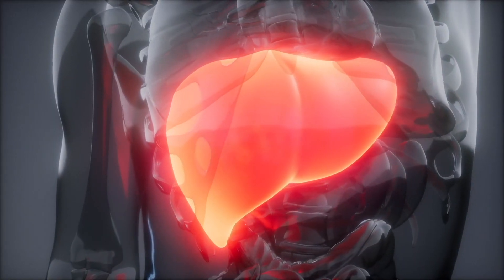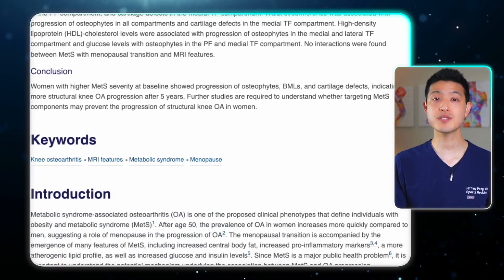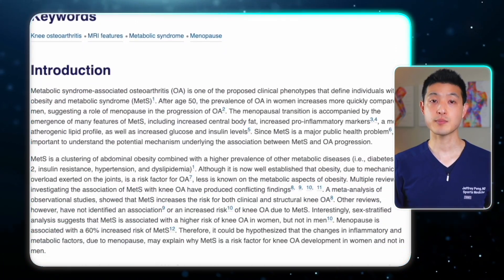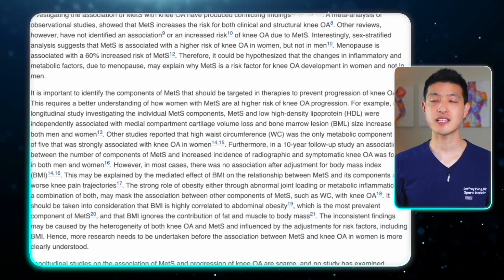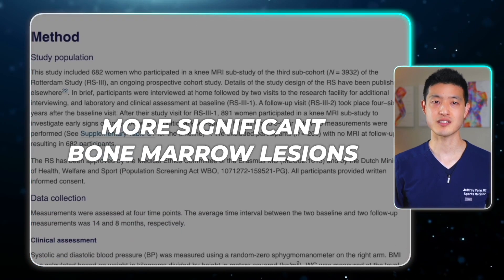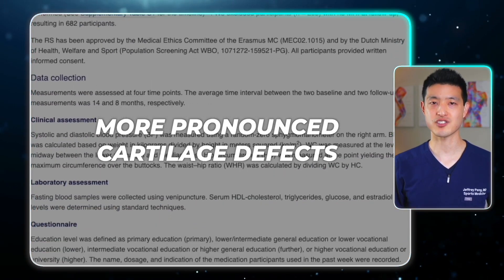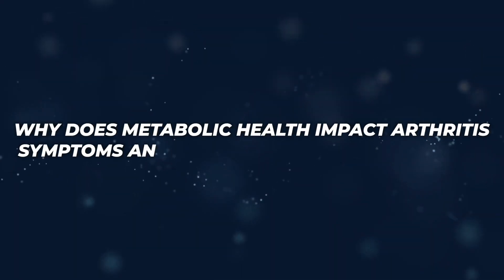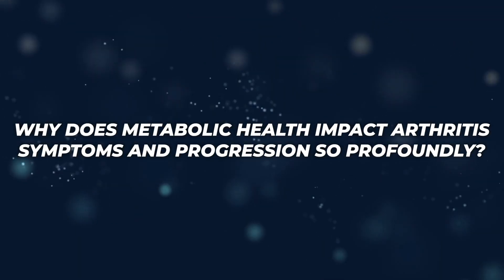Having metabolic syndrome significantly increases the risk of developing chronic diseases such as type 2 diabetes, cardiovascular conditions, kidney disease, and fatty liver disease. Clinical research has also established a link between metabolic syndrome and the progression of arthritis. Recent findings show that individuals with more severe metabolic syndrome experience faster deterioration, including increased bone spurring, more significant bone marrow lesions, and more pronounced cartilage defects.